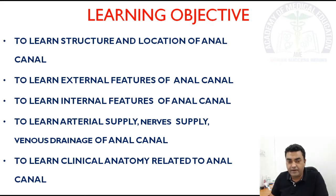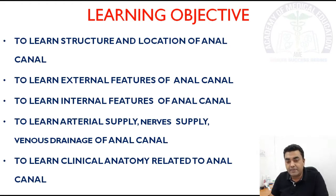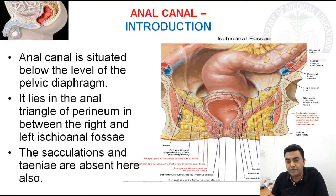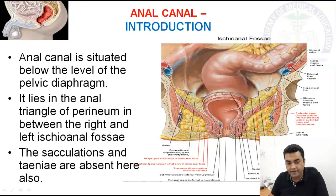The clinical anatomy includes hemorrhoids, fissures, etc. These are very commonly seen conditions in India-like countries. Introduction: the anal canal is situated below the level of the pelvic diaphragm. It lies in the anal triangle of the perineum.